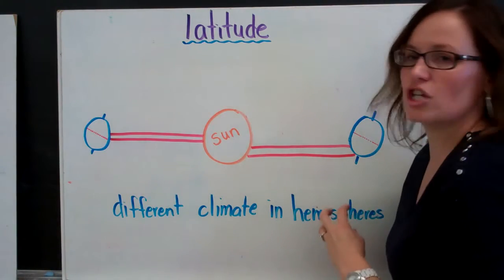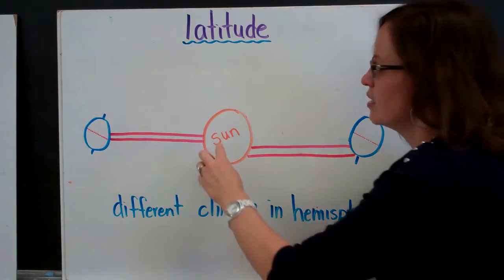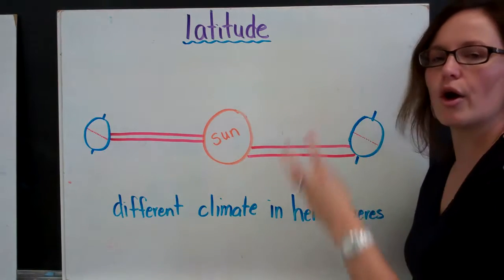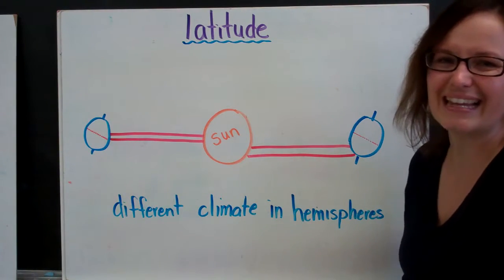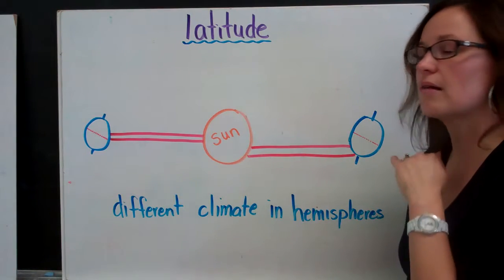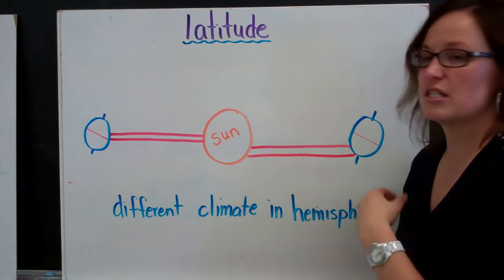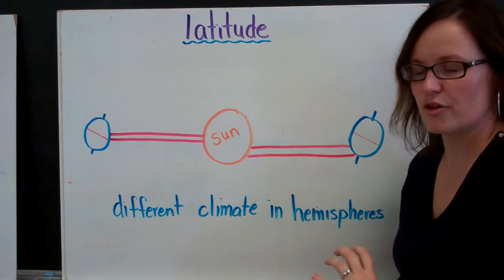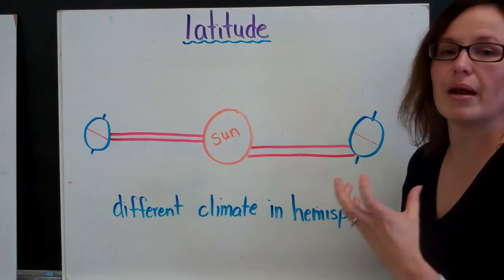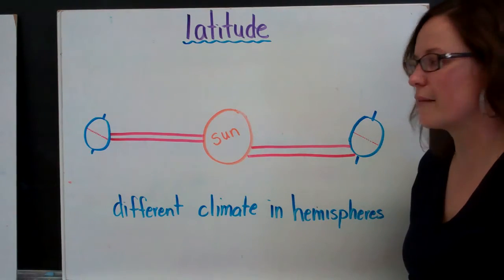Because depending on its position, that determines what kind of sunlight we are getting. Those areas around the equator, it doesn't really matter where they are around the Sun. They're pretty much always getting the direct rays from the Sun, which keeps their climate consistent. But other areas, specifically northern and southern hemisphere, depending on where they are in relation to the Sun, can determine how much sunlight they get or direct sun's rays they get and can determine their climate.